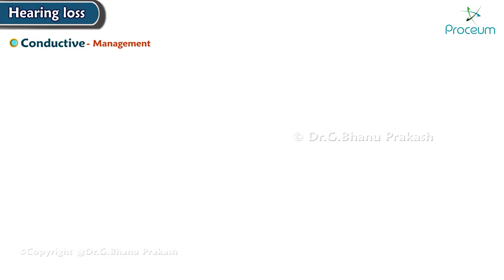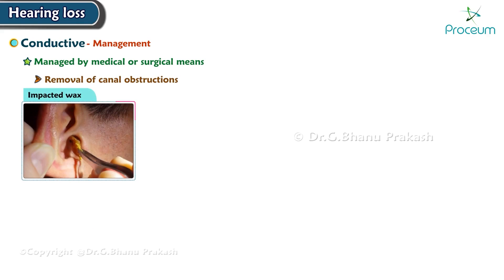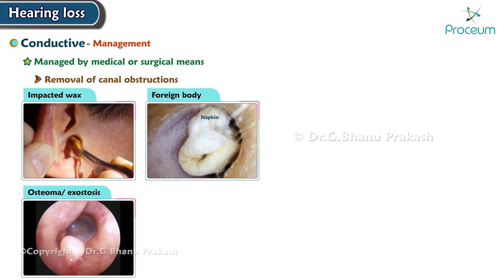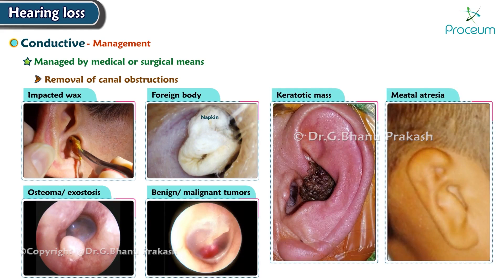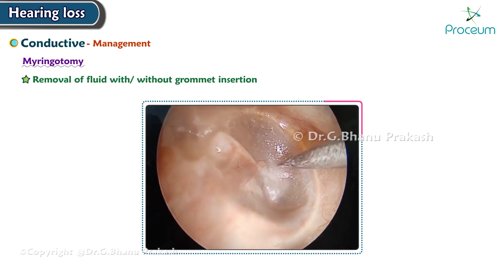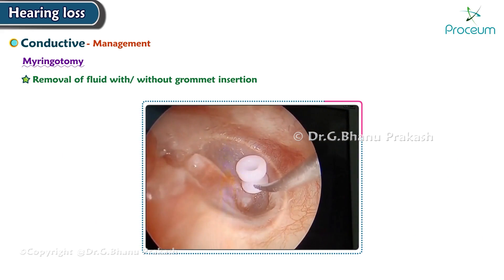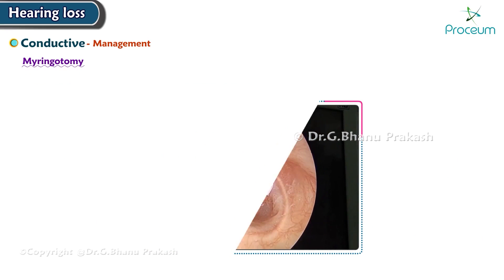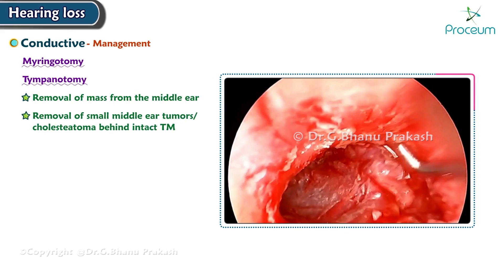Most cases of conductive hearing loss can be managed by medical or surgical means. Management consists of removal of canal obstructions like impacted wax, foreign body, osteoma, or exostosis, as well as benign or malignant tumors, keratotic mass, or meatal atresia. Removal of fluid through myringotomy with or without grommet insertion is also performed, along with removal of mass from the middle ear by tympanotomy and removal of small middle ear tumors or cholesteatoma behind the intact tympanic membrane.